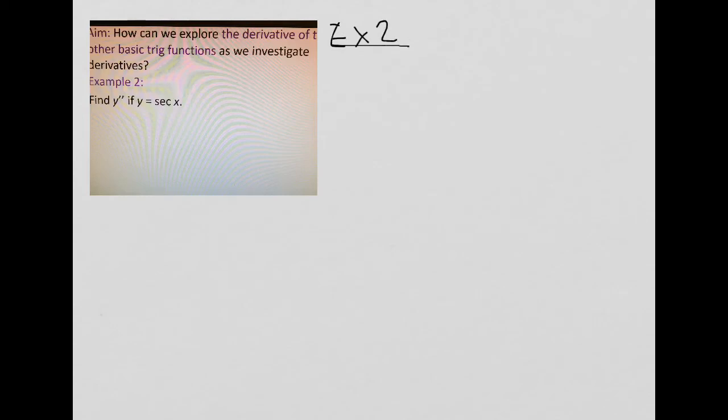It says find y double prime if y equals secant of x. This is also another popular one. So secant of x is secant of x tangent of x for its derivative. So that's what I'm going to write for y prime.